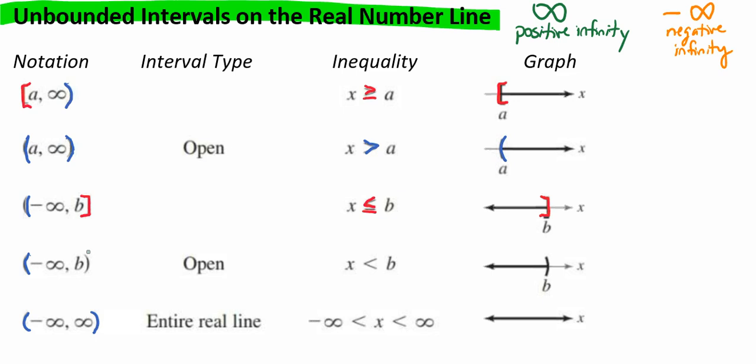If we look at our next problem, we have parentheses, negative infinity, comma, B, parentheses. Because our left side and our right side are both parentheses, we can say that this is open, just as we did before when both sides were parentheses. So here we can say that x is only less than B, and we use a parentheses when we graph that.